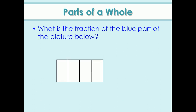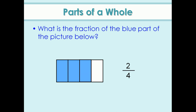In this way we write fractions. Look here: what is the fraction of the blue part of the picture? There are four total parts. If one part is colored blue, the fraction is one by four. If two parts are colored, the fraction is two by four. If three parts are colored, you write three by four. If four parts are colored, we write four by four.